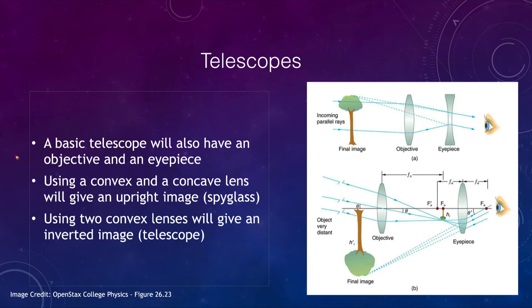Another device would be a telescope. A basic telescope will also have an objective and an eyepiece. In the upper one we're using a convex and a concave lens, and that will give us an upright image. That's what we use for a spyglass. However, if you use two convex lenses as we do in telescopes, you will get an inverted image. That would not be very good for a spyglass, but it wouldn't make any difference for astronomical objects.